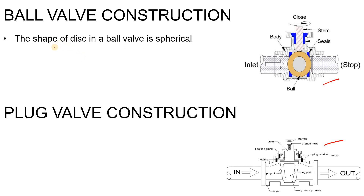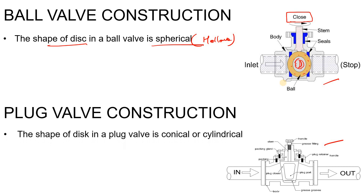In a ball valve, the shape of the disc is spherical — a hollow spherical shape. Here you can see this is my ball valve, and this is the disc, which is the heart of any valve. This is the front view of the ball valve, and this is the hollow section. Right now this valve is in a closed condition.